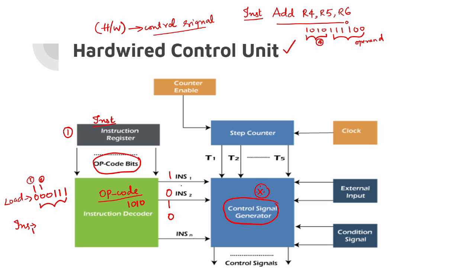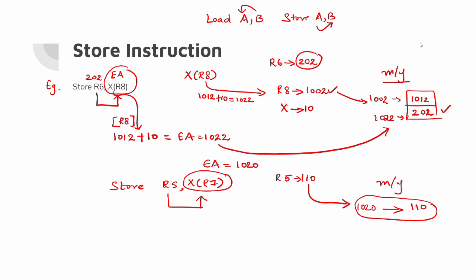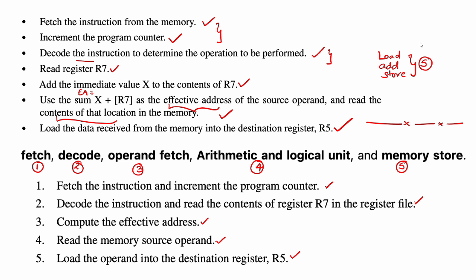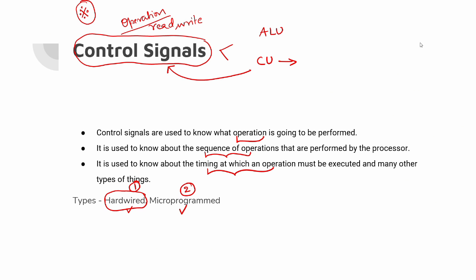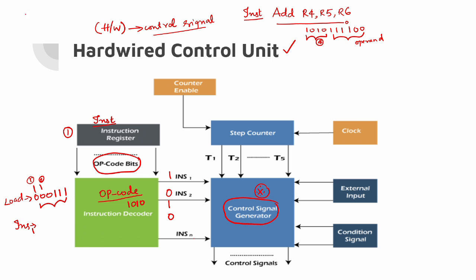There is a sequence of operations. The basic thing is - first of all the hardwired control unit needs to step through instructions. Let's go through the instructions. There are 5 steps: the first one is fetch, next one is decode, next one is operand read, then fourth step is ALU, then fifth step is store - memory store.